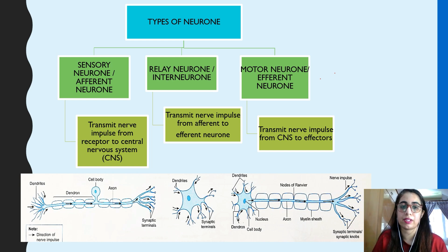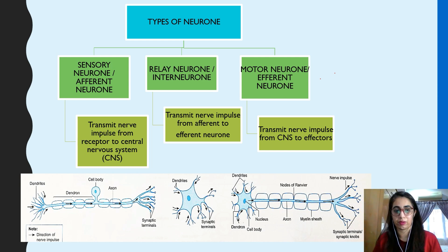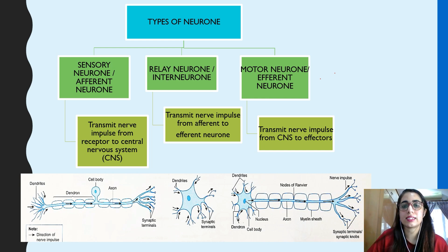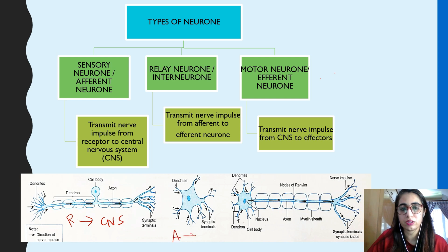The afferent (sensory) neuron transmits nerve impulses from receptors to the central nervous system. The interneuron transmits impulses from the afferent neuron to the efferent neuron. The motor (efferent) neuron transmits impulses from the central nervous system to the effectors. So the pathway is: afferent neuron → interneuron → efferent neuron, with the interneuron located in the CNS gray matter.